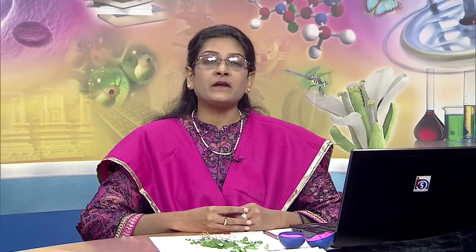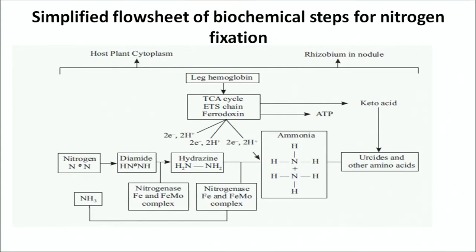The overall biochemical equation and flow chart for nitrogen fixation shows how leghemoglobin is involved in the conversion of nitrogen into diamide, then into hydrazine, then into ammonia. Since ammonia is toxic and must be utilized immediately, it is converted into ureides and other amino acids. It is also noted that the nitrogenase enzyme contains iron and molybdenum complexes, referred to as FeMo complexes.